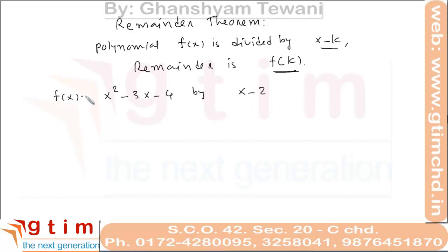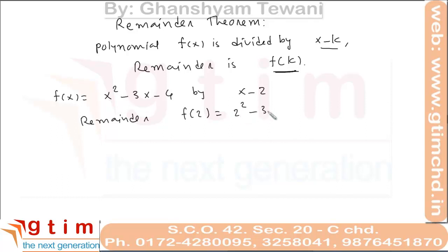The remainder will be f(2). The value of f(2) is 2 squared minus 3 multiplied by 2 minus 4, which is minus 6. This minus 6 is the remainder when this expression is divided by x minus 2.